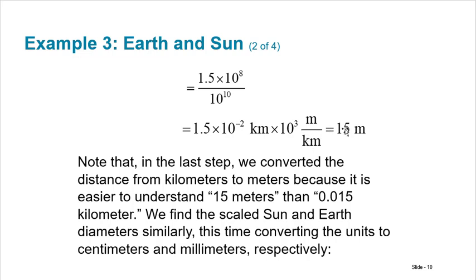And we get 1.5×10^-2 kilometers. And then we can do that times 10^3 to change it to meters because there's a thousand meters in a kilometer. So we basically end up getting 15 meters. So now we've converted that big distance to 15 meters and we can think of okay so the distance from the earth to the sun is 15 meters. That's something that I can visualize because a meter is basically a yard, so that's like 15 yards. So note that in the last step we converted the distance from kilometers to meters because it's easier to understand 15 meters than it is to understand 0.015 kilometers.